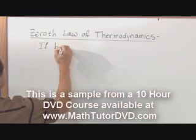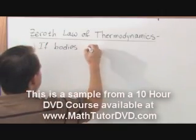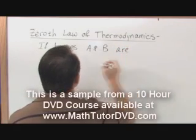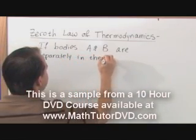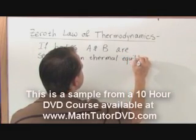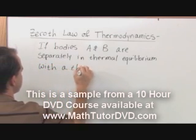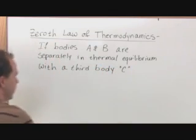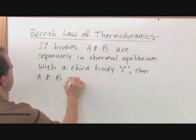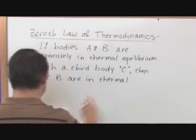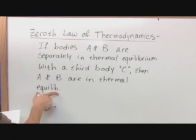If bodies - bodies can be anything: a Coke can, an ice chest, a car, anything with mass and volume - if bodies A and B are separately in thermal equilibrium with a third body C, then A and B are in thermal equilibrium with each other. Here's how I'm going to write equilibrium so I don't write that out every time.